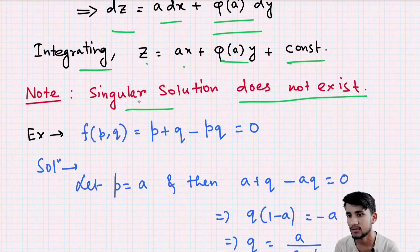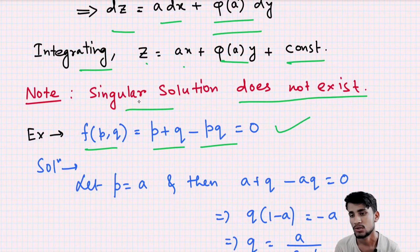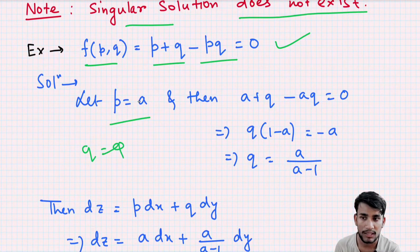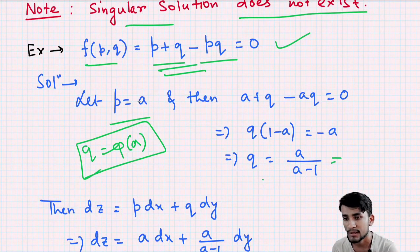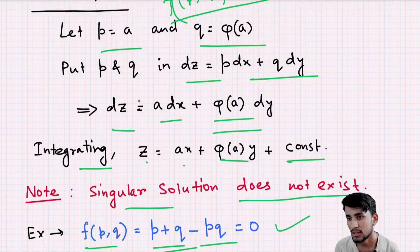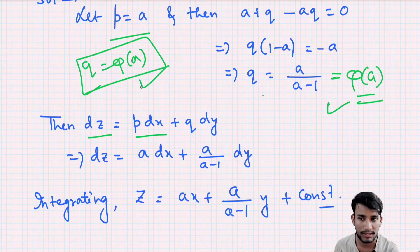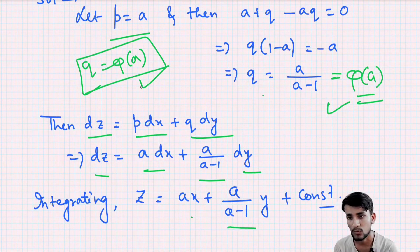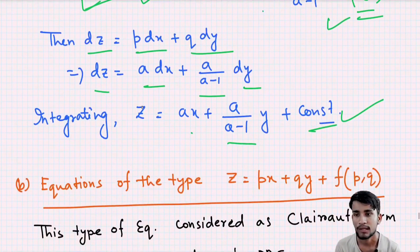Example for Type A: f(p,q) = p + q − pq = 0. Let p = a. Substituting into the equation gives q = a/(a−1), which is φ(a). Now put p and q into dz = p dx + q dy: dz = a dx + (a/(a−1)) dy. Integrating, we get z = ax + (a/(a−1))y + constant. This is the complete integral for an equation that is a function of p and q only.